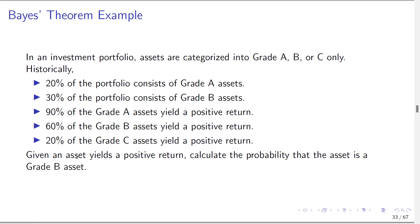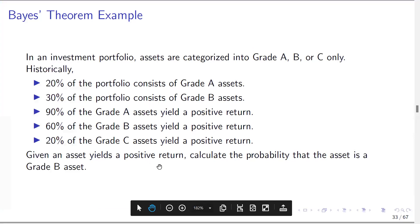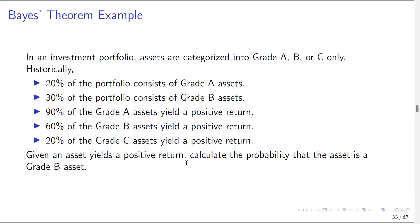Now here's an example about investments. In an investment portfolio, assets are categorized into grade A, B, or C only. Historically, 20% of the portfolio consists of grade A assets, 30% consists of grade B assets. 90% of grade A assets yield a positive return, 60% of grade B assets yield a positive return, and 20% of grade C assets yield a positive return. Given that an asset yields a positive return, calculate the probability that the asset is grade B.